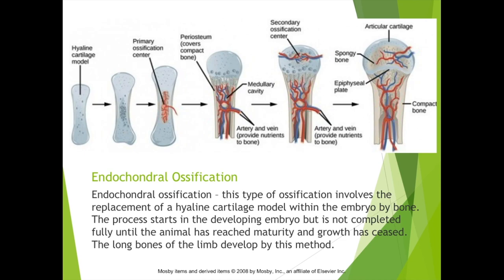This type of ossification involves the replacement of the hyaline cartilage model within the embryo by bone. The process starts in the developing embryo but is not completed until the animal has reached maturity and growth has ceased. The long bones of the limb develop by this method. The primary ossification center starts within the middle of the bone, which will eventually become the medullary cavity, and then secondary ossification occurs in the epiphyses — the ends of the bone. We'll also talk about growth plates, which are essentially the epiphyseal plate.